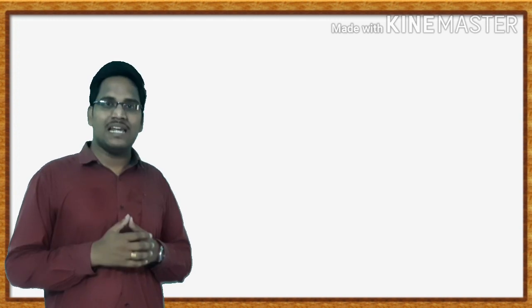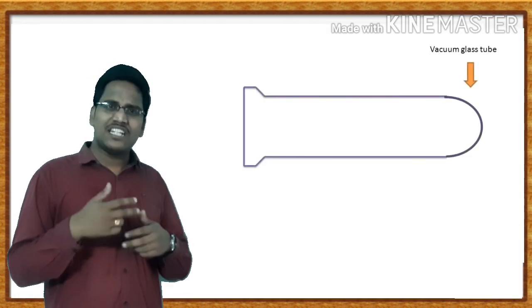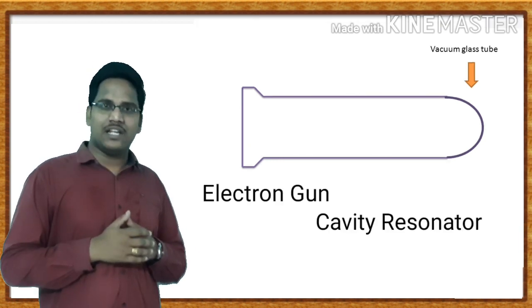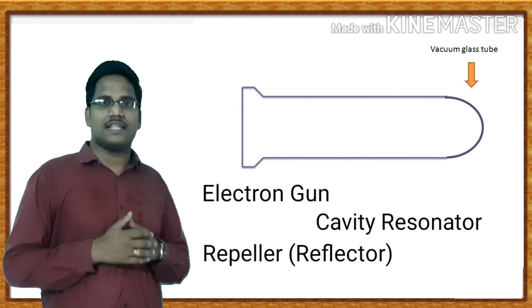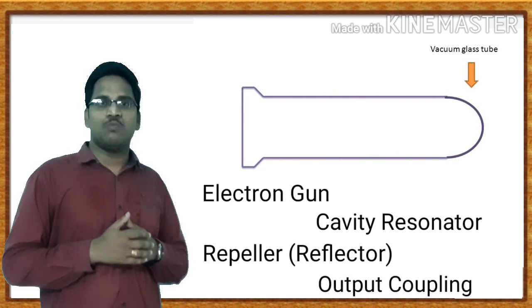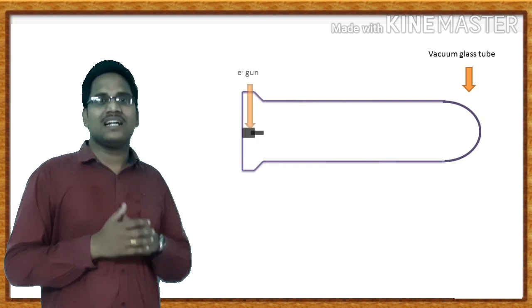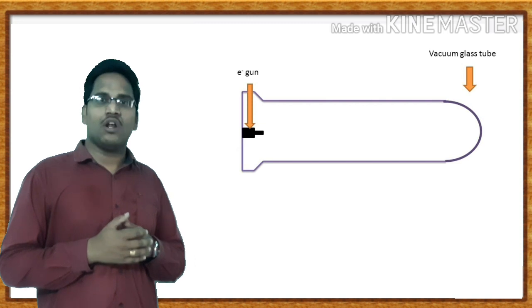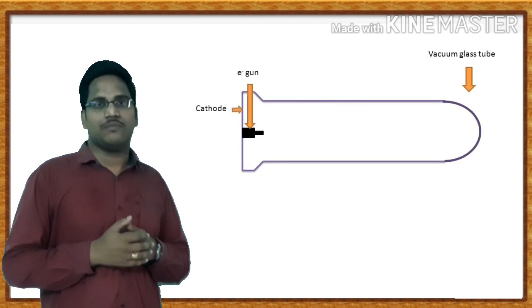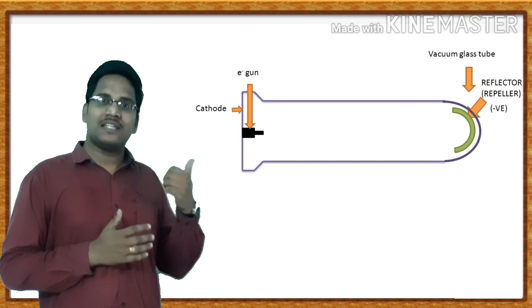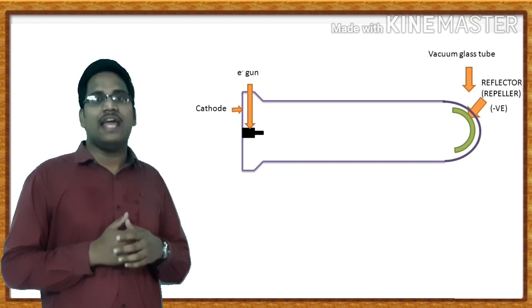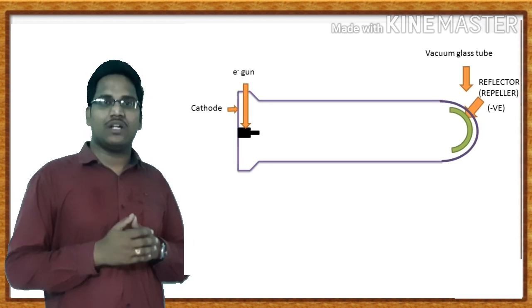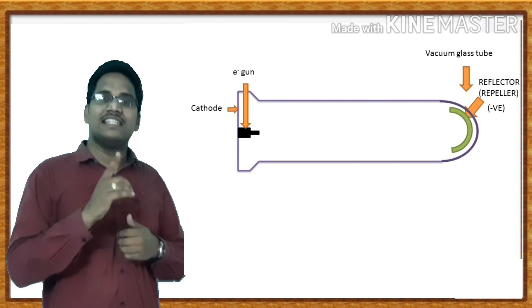It is basically a vacuum glass tube. Many sections are present inside this tube: an electron gun, cavity resonators, and a repeller electrode. The repeller electrode is present at the opposite end of the electron gun — it reflects the electron beam back to the cavity resonator. It consists of a single cavity.